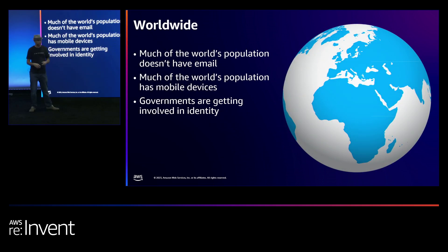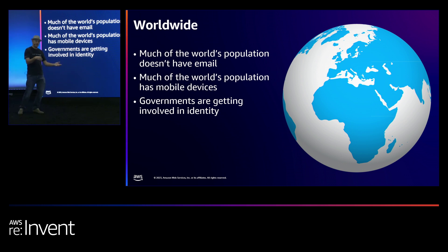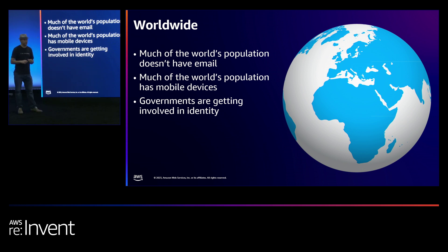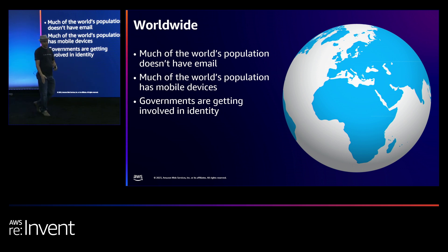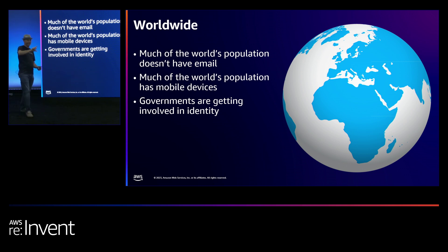This is now a worldwide problem. Most of the world's population doesn't have access to email, so we have to think about identity in new ways. Through this entire stack of 50 things we've listed, we have to think about this as a global problem — how are we logging people in from different regions of the world? Governments are getting involved: the US is dabbling with Gov ID, Europe has theirs, and even states are doing digital IDs. In Colorado, you can store your ID encrypted on your phone — you have to log into that device to unlock your ID to show it.